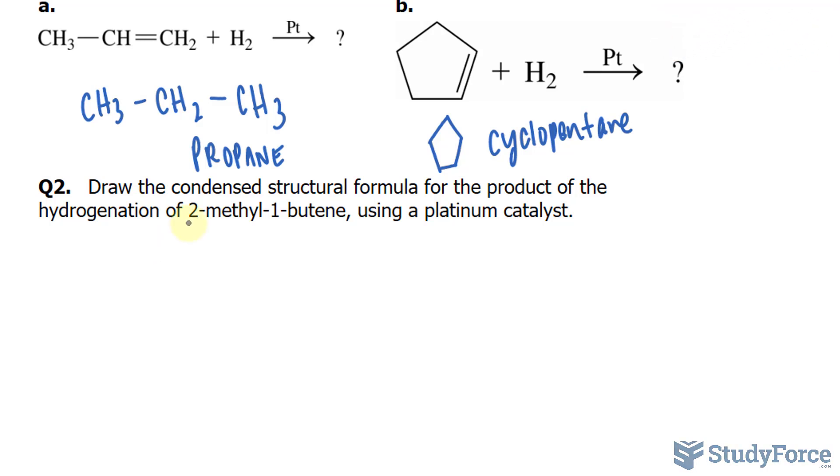Unlike question number one, we have to draw this out. It's not so bad because butene is a four carbon chain, and the fact that we have 1-butene means that the double bond exists at the first carbon. So we have CH2 double bonded to another carbon, and two more.